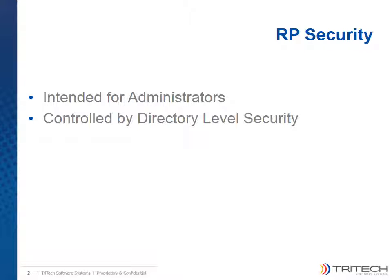There are three security profile settings that control access to and the functionality of remittance processing. Access to the remittance processing utility is granted by setting the level of security on remittance processing on the utilities tab of the security profile to full access. A user with full access will be able to access the utility when logged into the directory that the security profile is applied to, and can utilize any feature of remittance processing except the posting of credits.